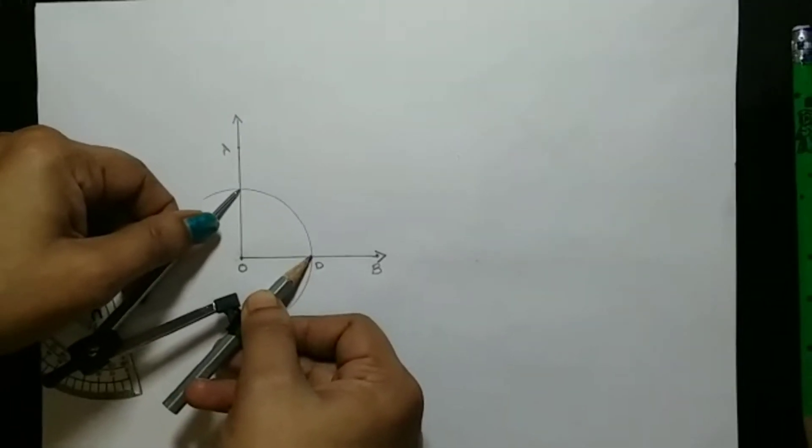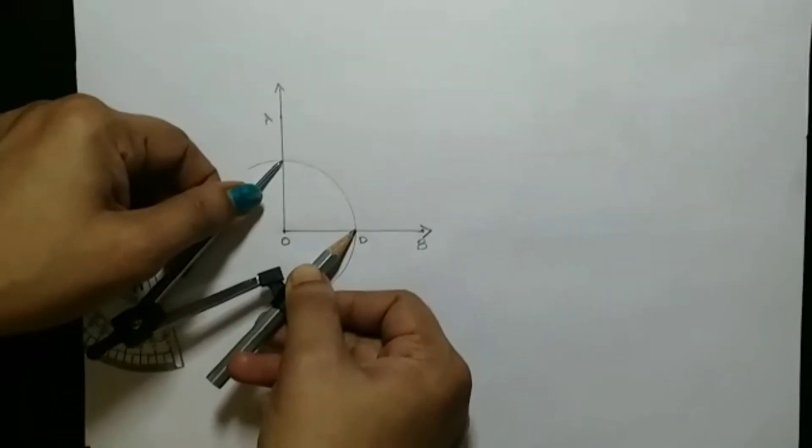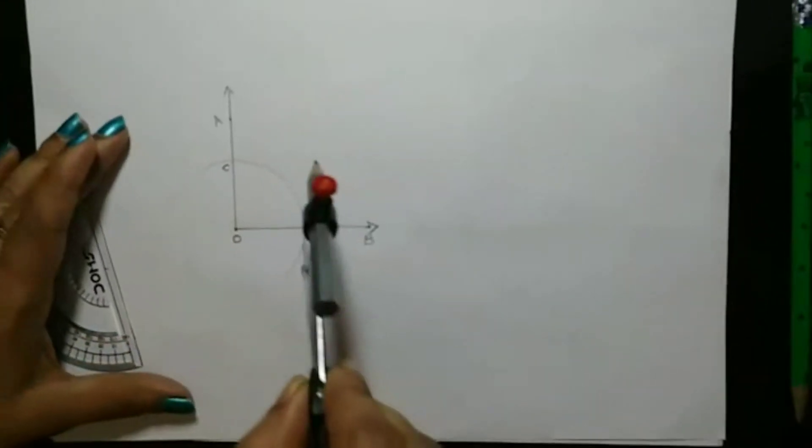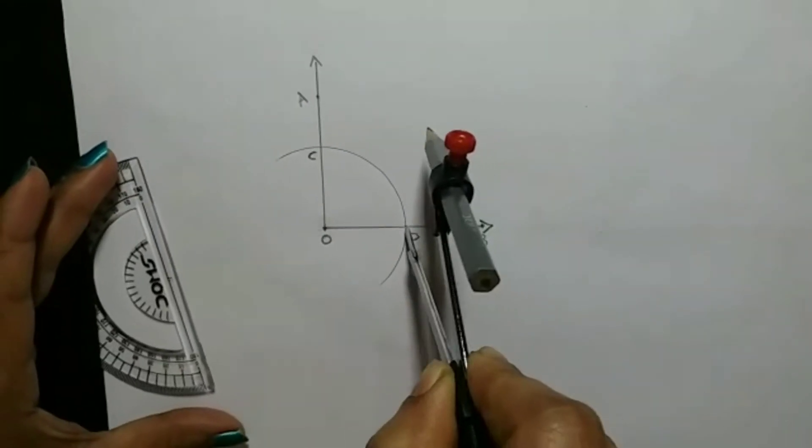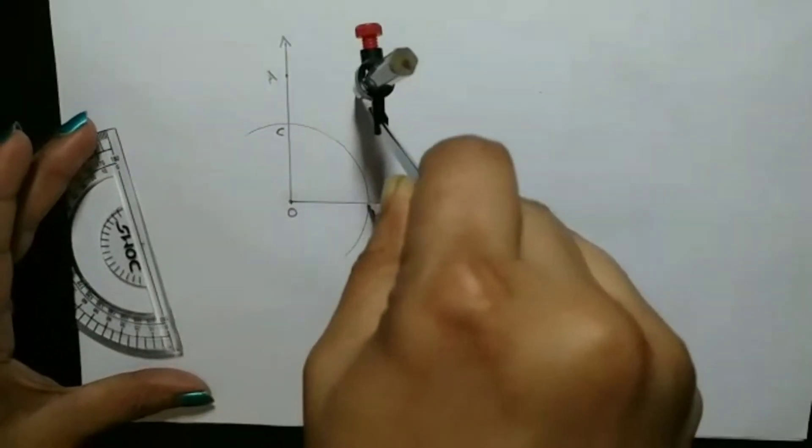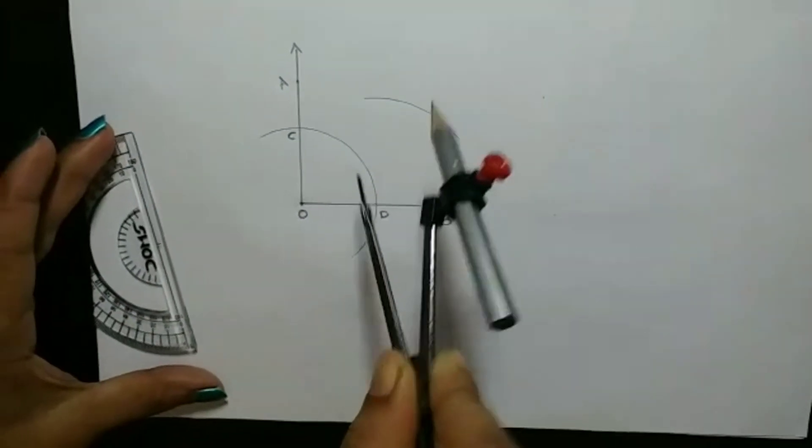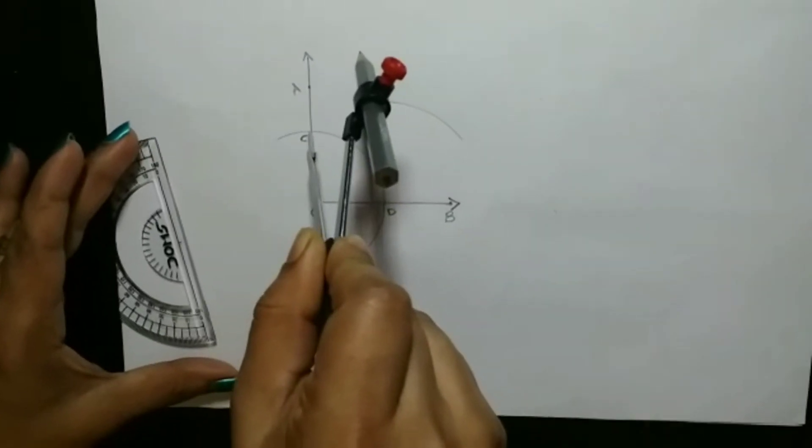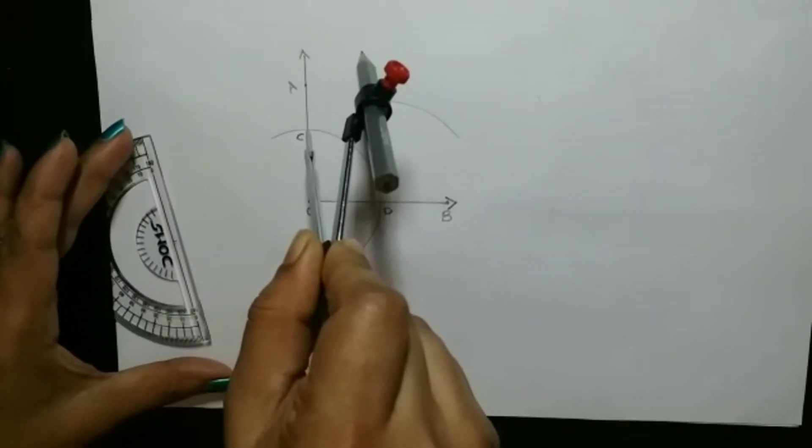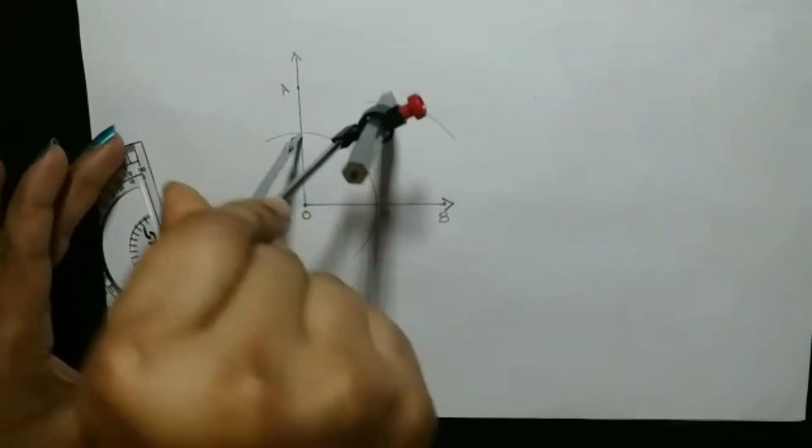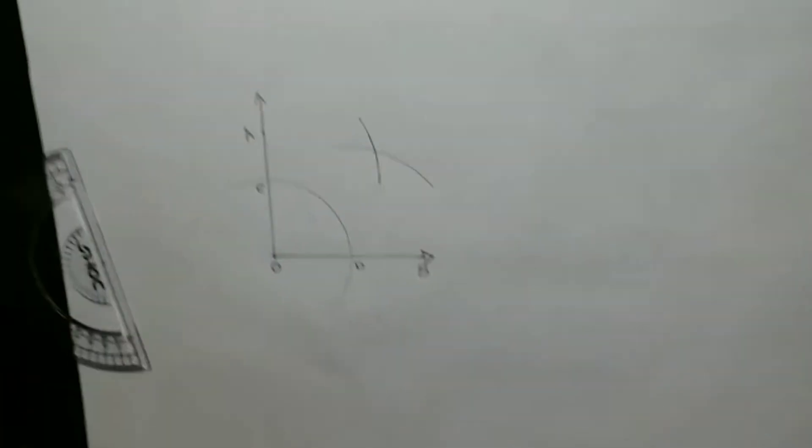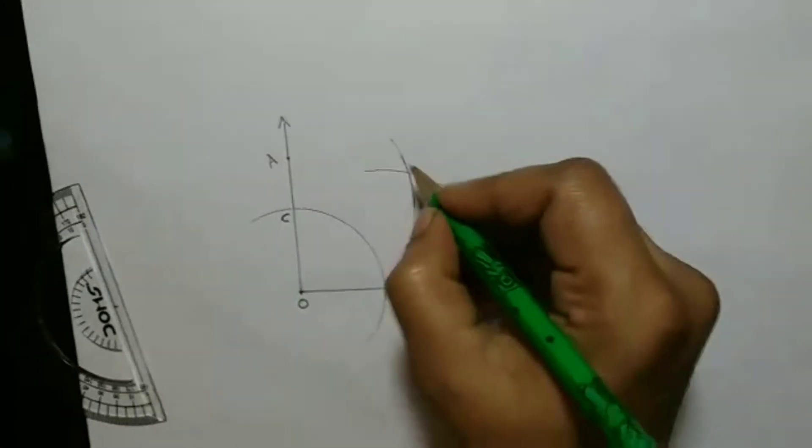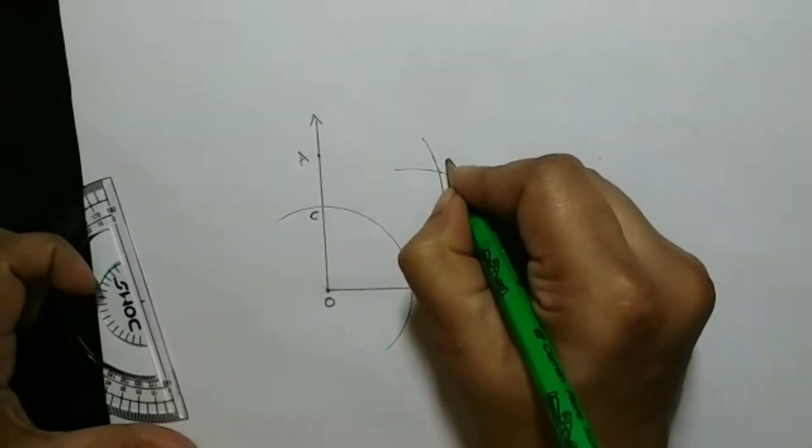Now without changing the radius, I am keeping my center as D. With D as center, draw an arc. And without changing the radius and keeping C as center, draw another arc. So again we got one more intersecting point. That point I am naming it as E.